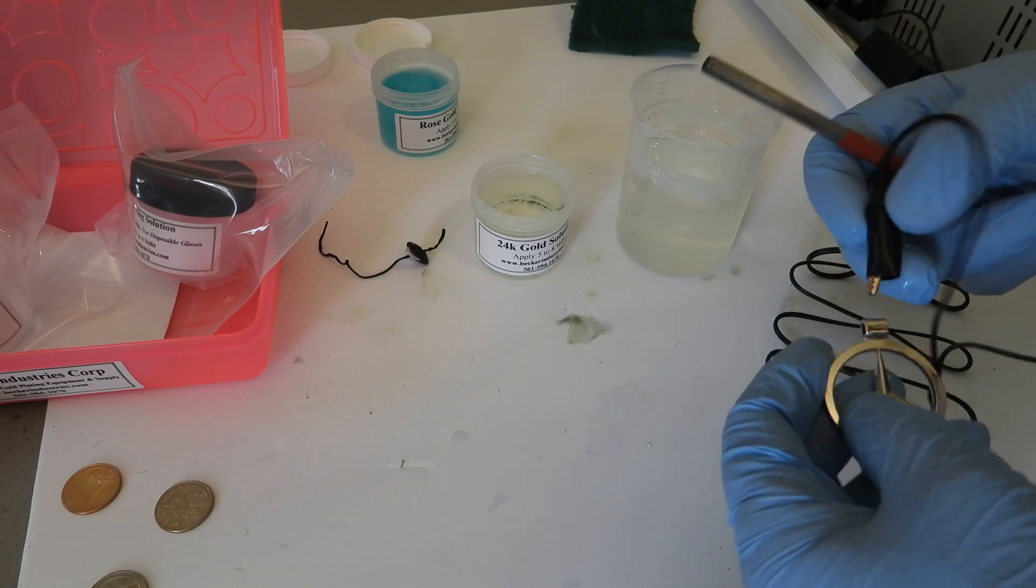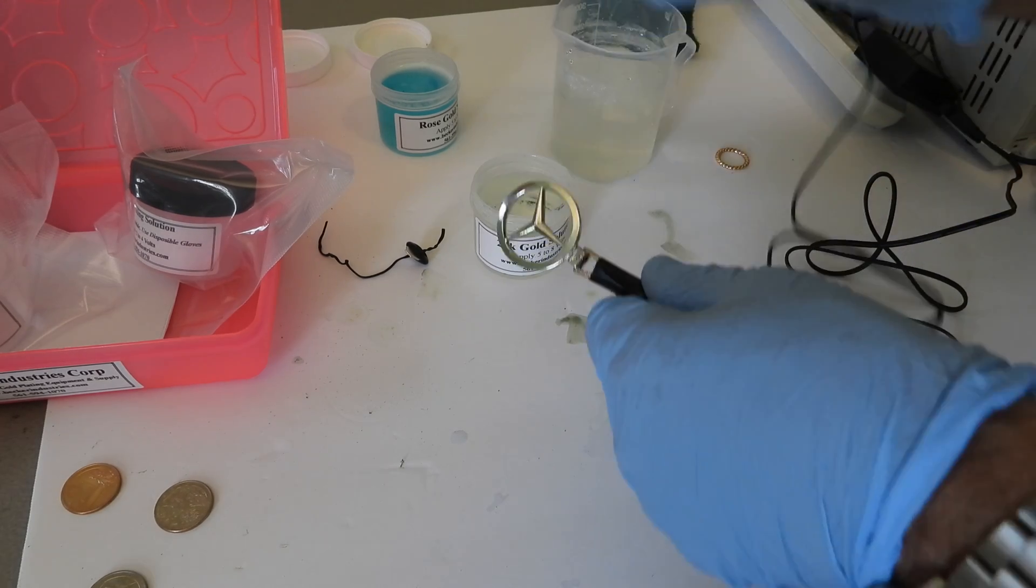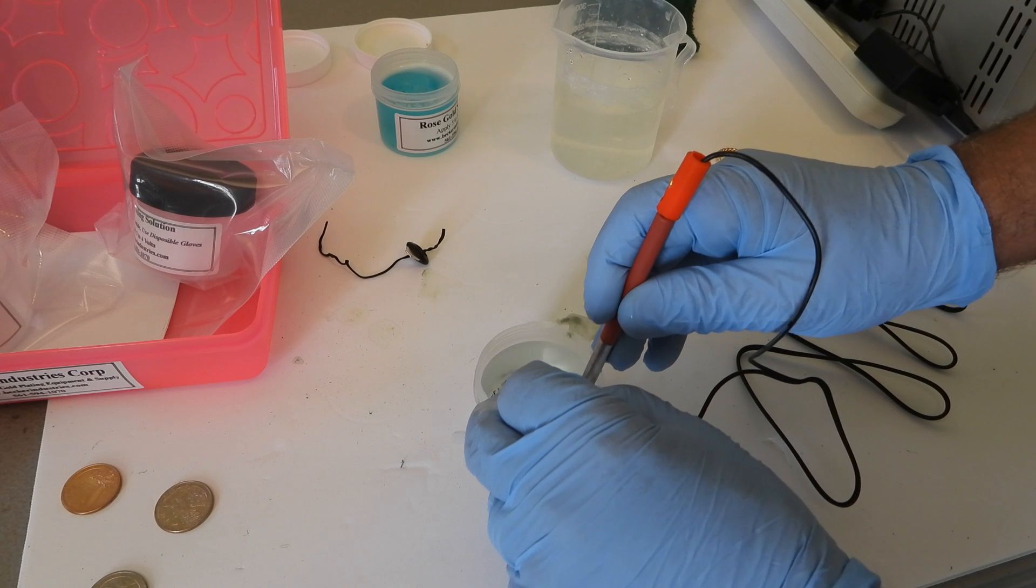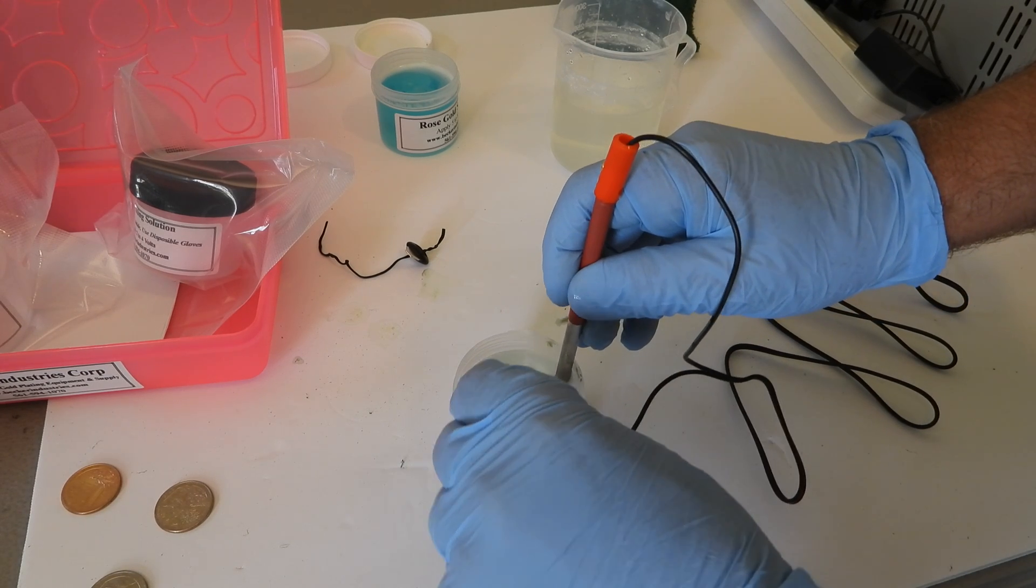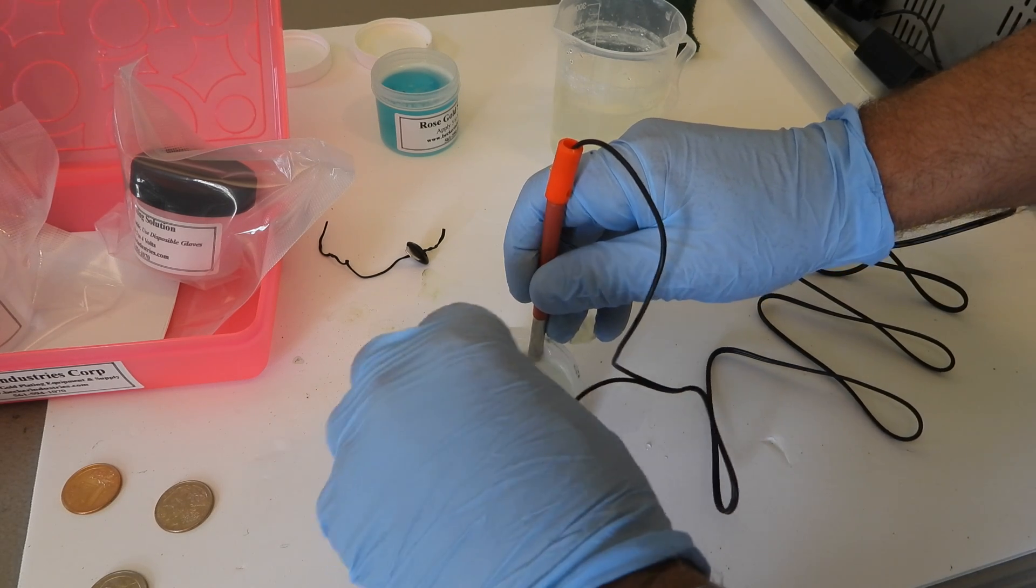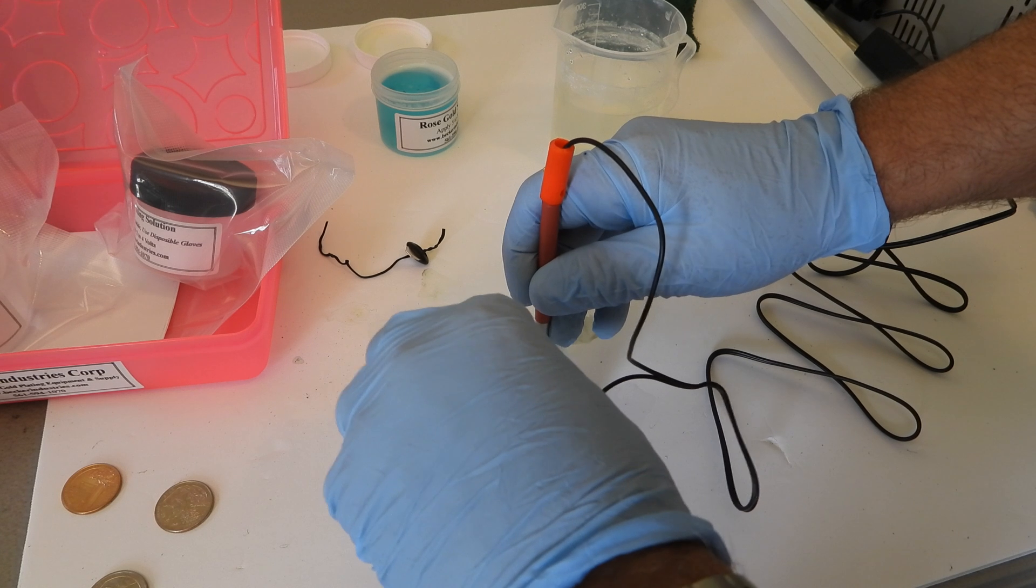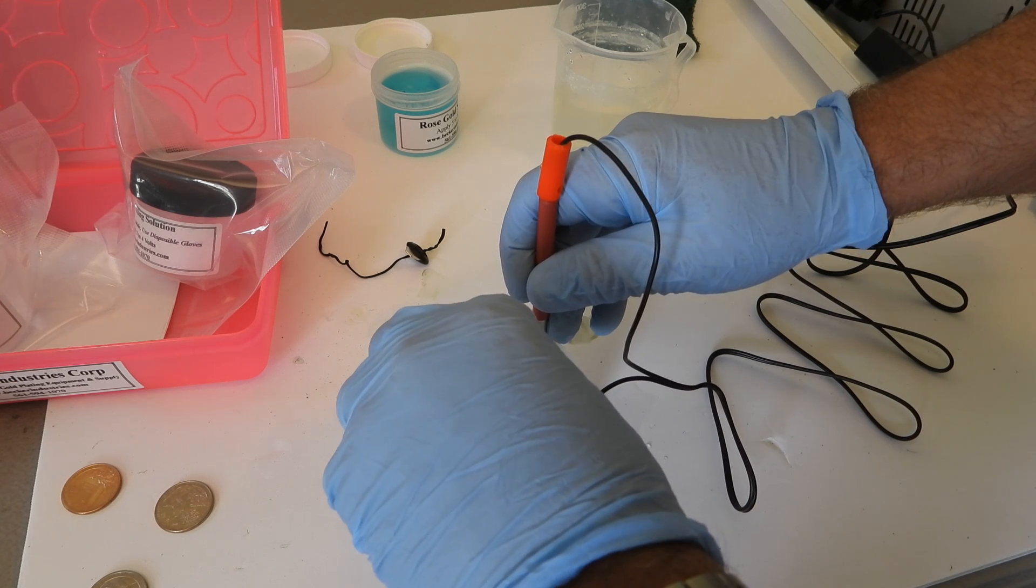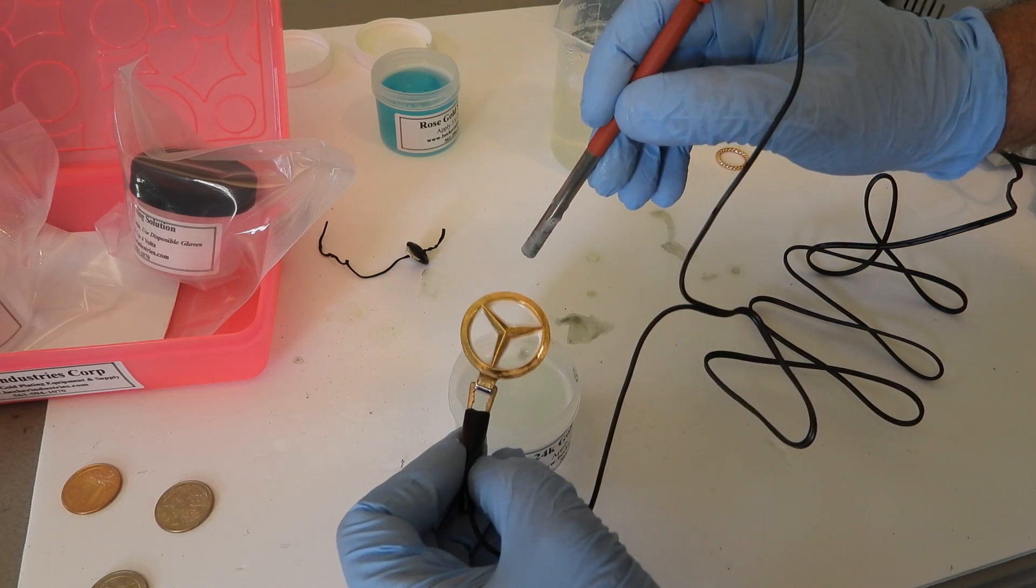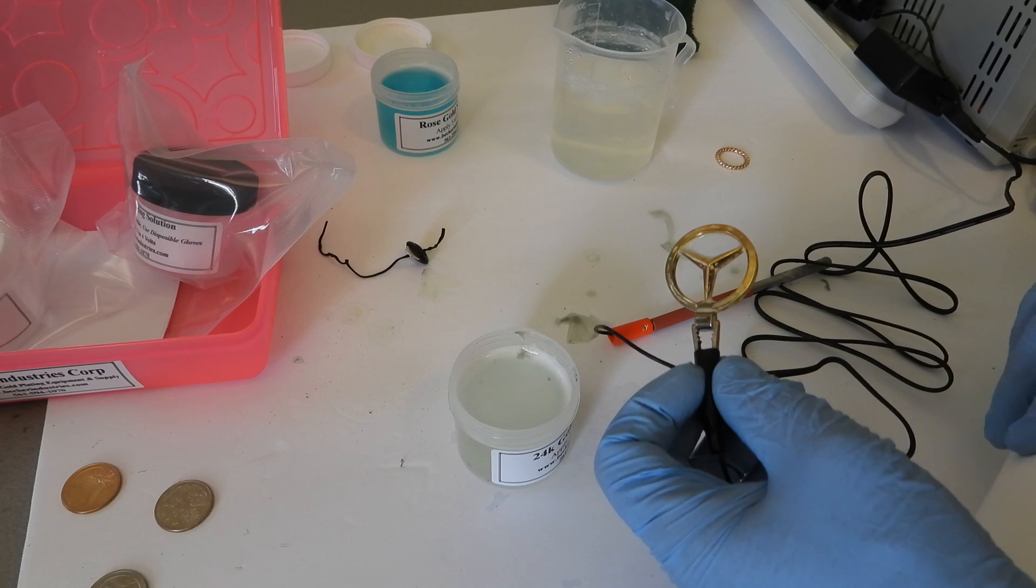This is, I think it's a Mercedes keychain. I'm just gonna use this. I think this is nickel plated. Dip it in there. At the same time again, dip the tip of the anode. Be sure they don't touch each other. You can move it around.